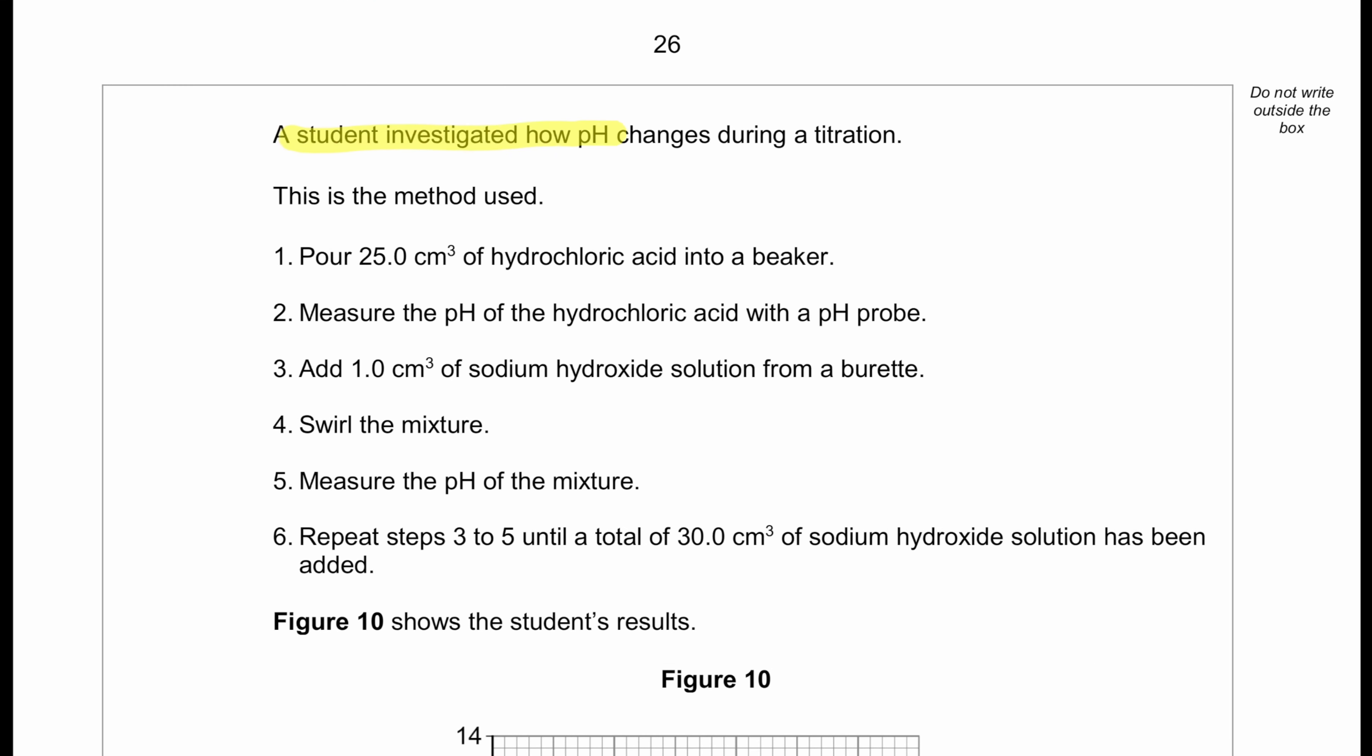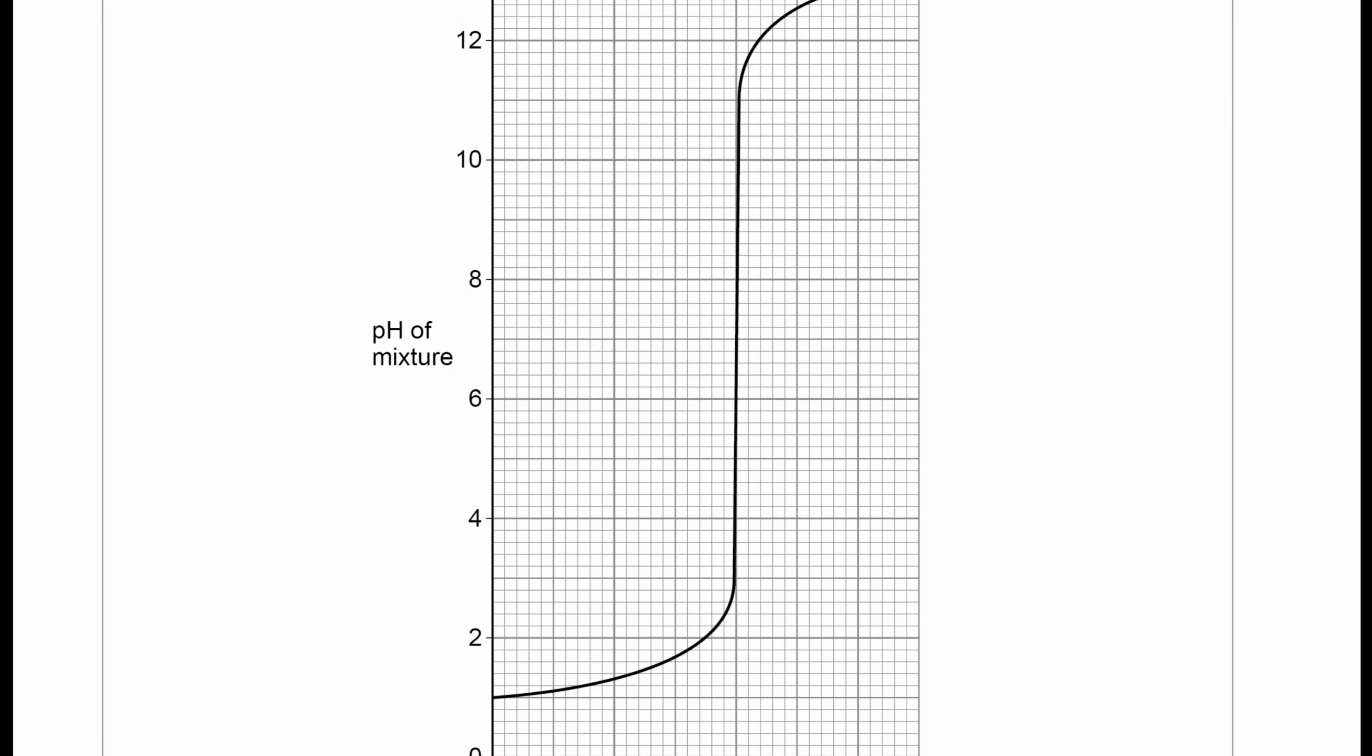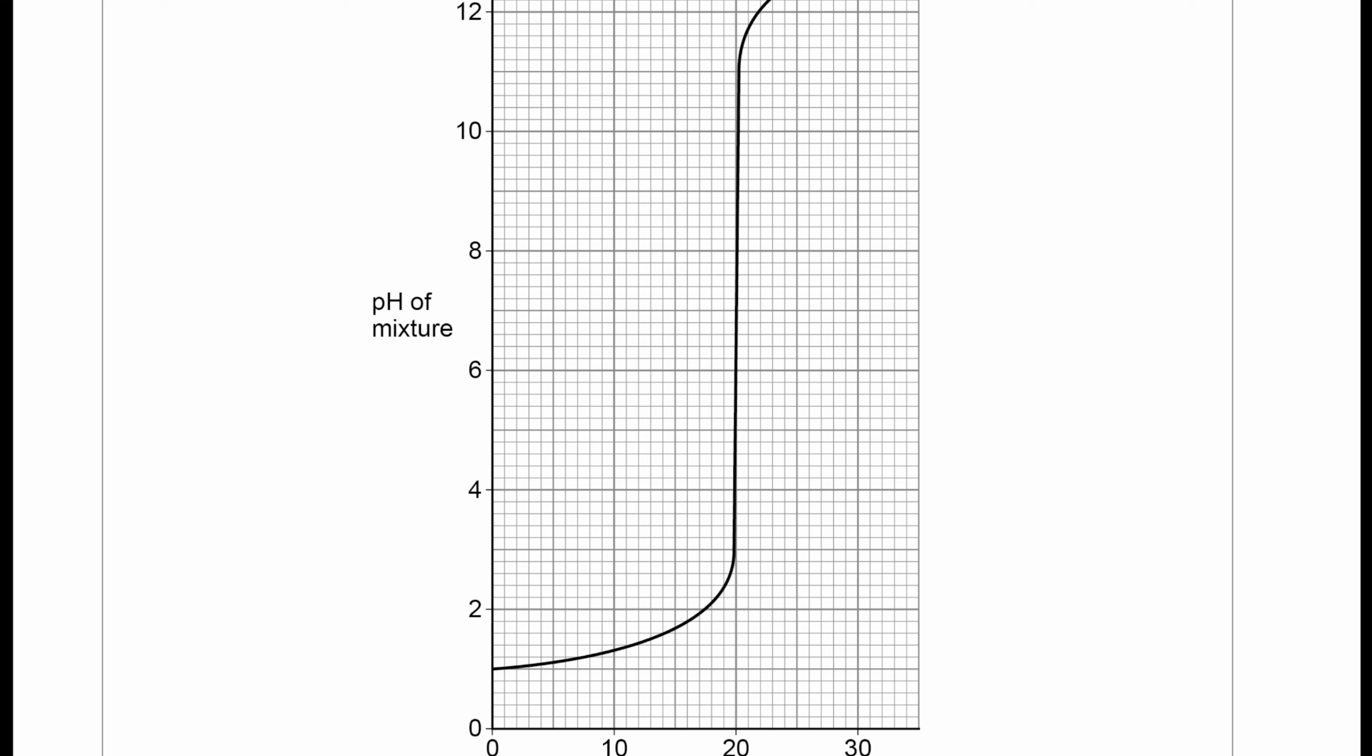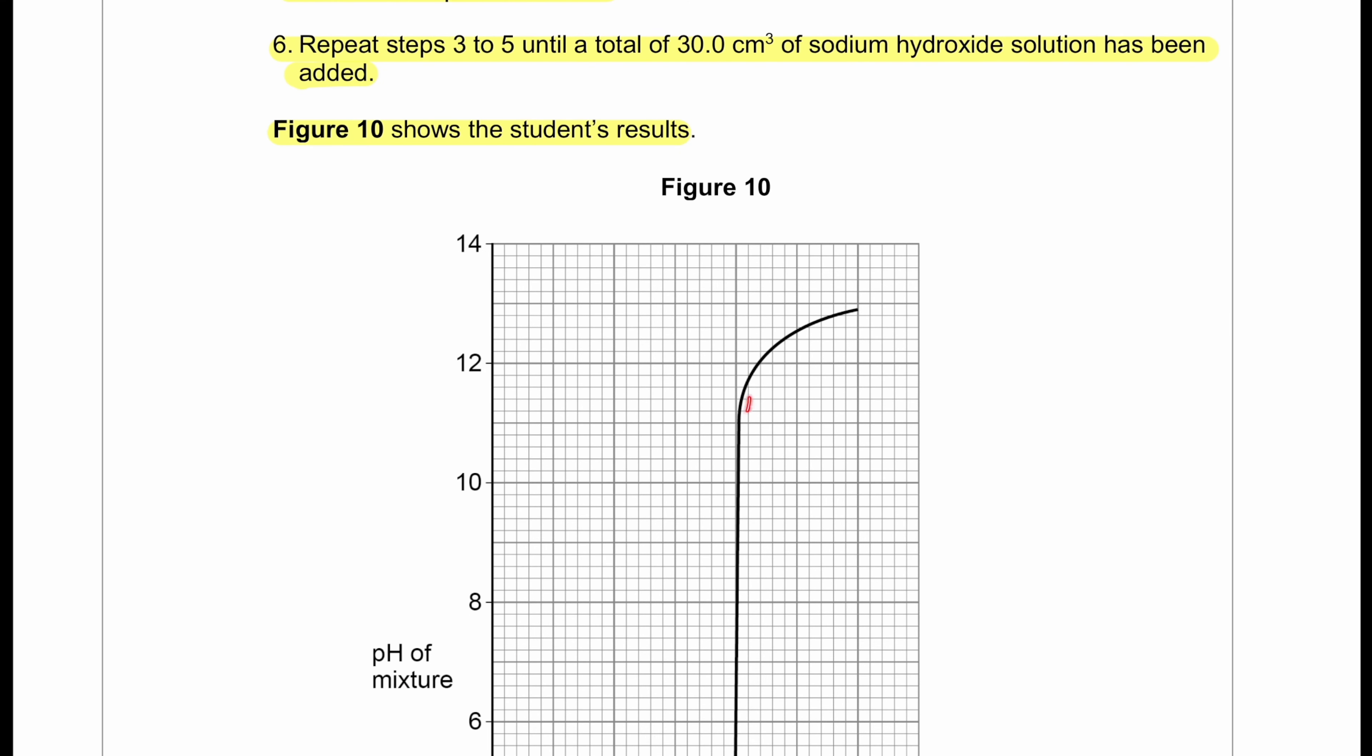A student investigated how the pH changes during the titration. This is the method used: Pour 25 cm³ of hydrochloric acid into a beaker. Measure the pH of the hydrochloric acid with a pH probe. Add 1 cm³ of sodium hydroxide solution from a burette. Swirl the mixture, measure the pH of the mixture. Repeat steps 3 to 5 until 30 cm³ of sodium hydroxide solution has been added. Figure 10 shows the student's results. We can see as we kept on adding the sodium hydroxide solution, the solution went from an acidic range, it jumped to an alkaline range, and then it plateaued.